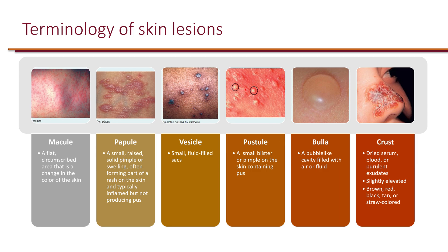You can visibly see the pus here. And a bulla, which some would call a blister, is a bubble-like cavity filled with air or fluid. And of course, crust is the dried serum, blood, or purulent exudate, which is typically the final phase of skin lesions.